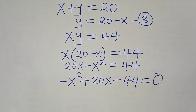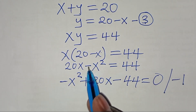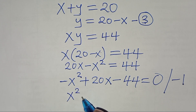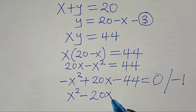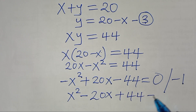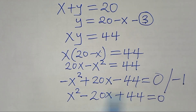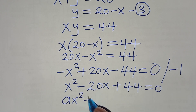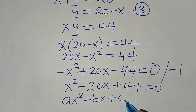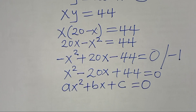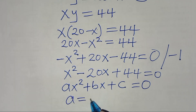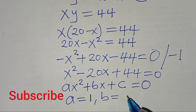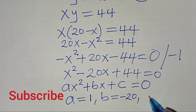Multiply both sides by negative 1 to get x squared minus 20x plus 44 equals 0. This is a quadratic equation of the form ax squared plus bx plus c equals 0. From this quadratic equation, a equals 1, b equals negative 20, and c equals 44.